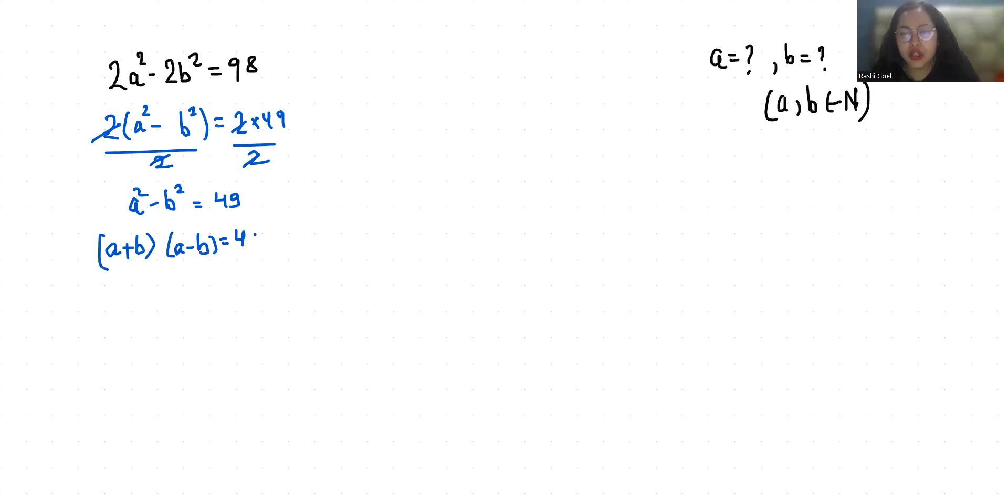Now we can say that a+b will be greater than a-b, and the factors of 49 are 1×49, 7×7, and 49×1.